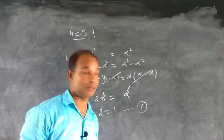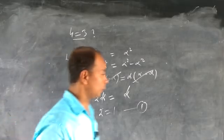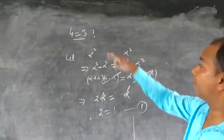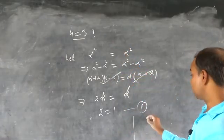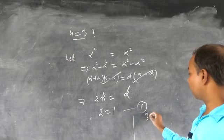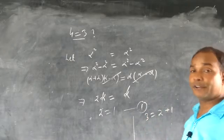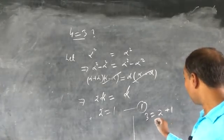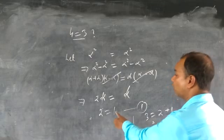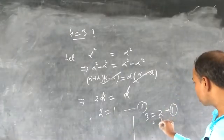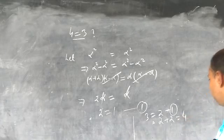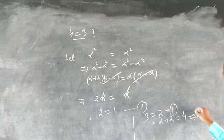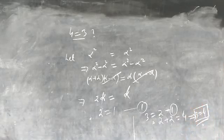Now, we know that 4 is there and 3 is there. From algebra we know 3 equals 2 plus 1. We just proved that 1 equals 2, so we can write 2 in place of 1. So 3 equals 2 plus 2, which equals 4. Therefore 3 equals 4 — this is what we proved.